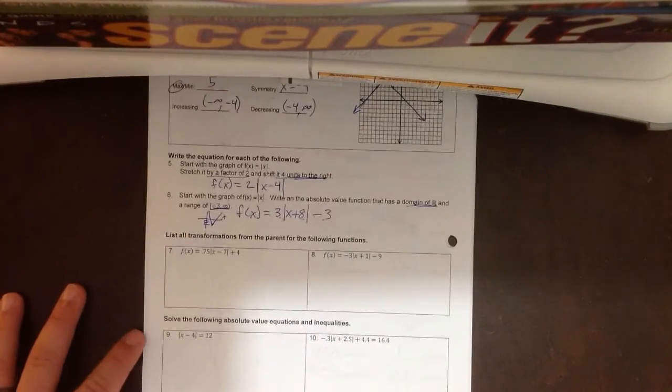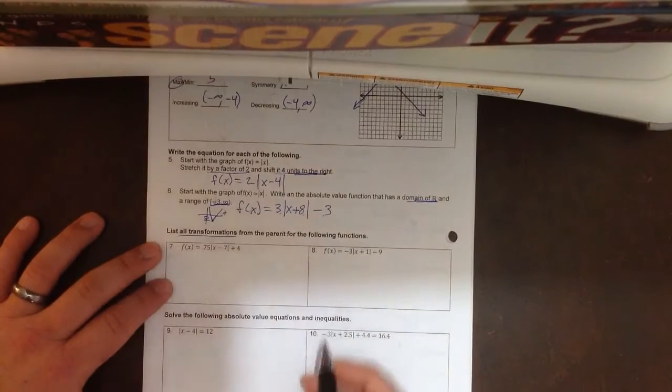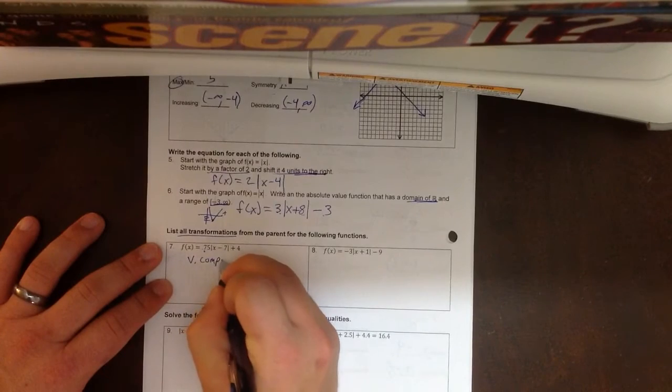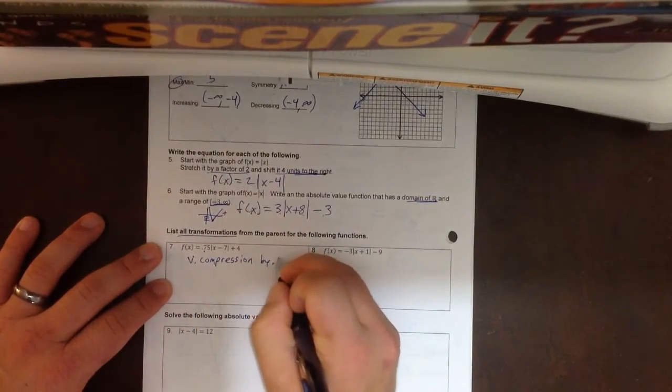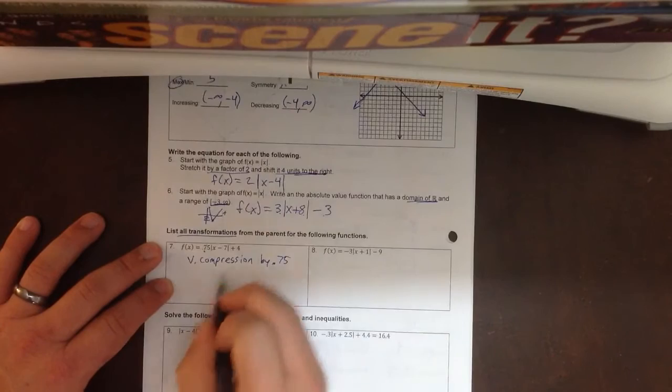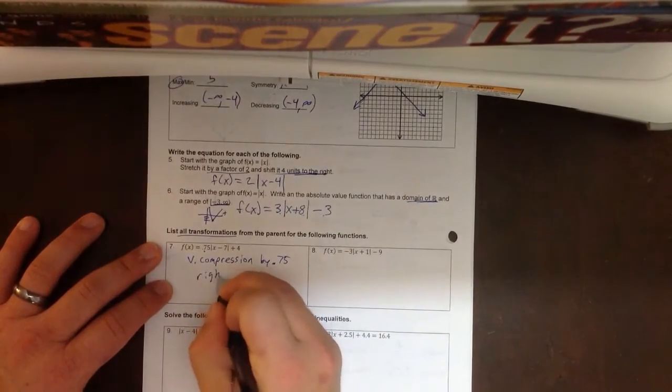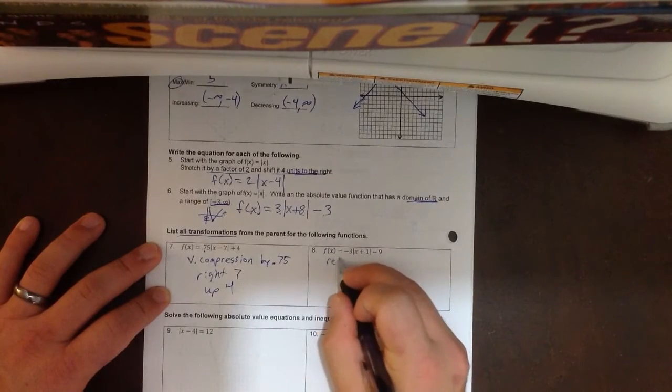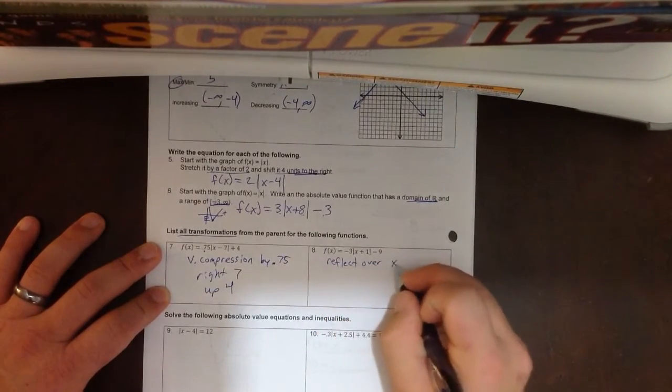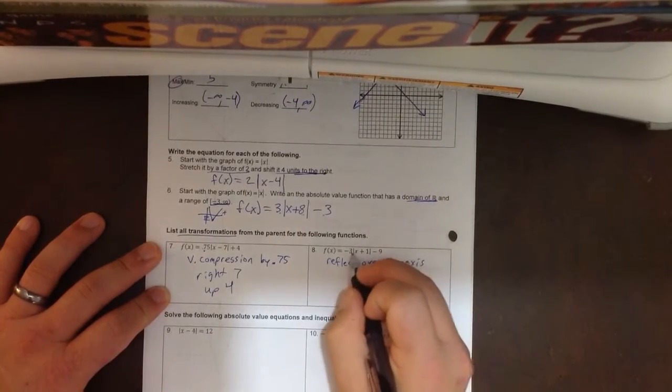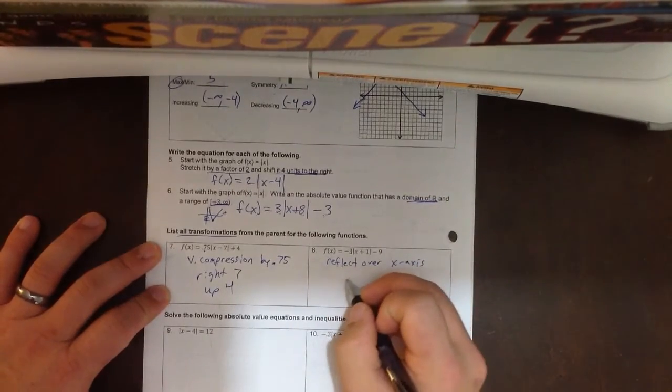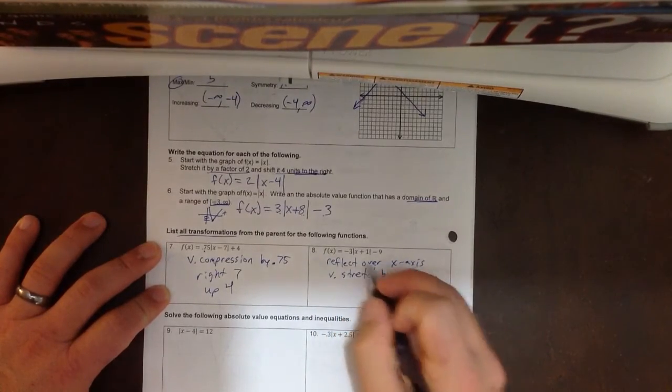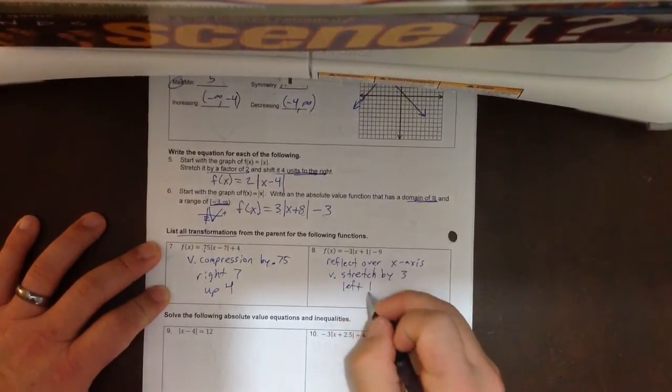Alright, number 7. On this one, we're just listing transformations. So 0.75, that's lower than 1. There's going to be a vertical compression by 0.75. We're going to go right 7 and up 4. That negative is going to be a reflection over x. The 3 is greater than 1, and so that is going to be a vertical stretch. We're going to go left 1 and down 9.